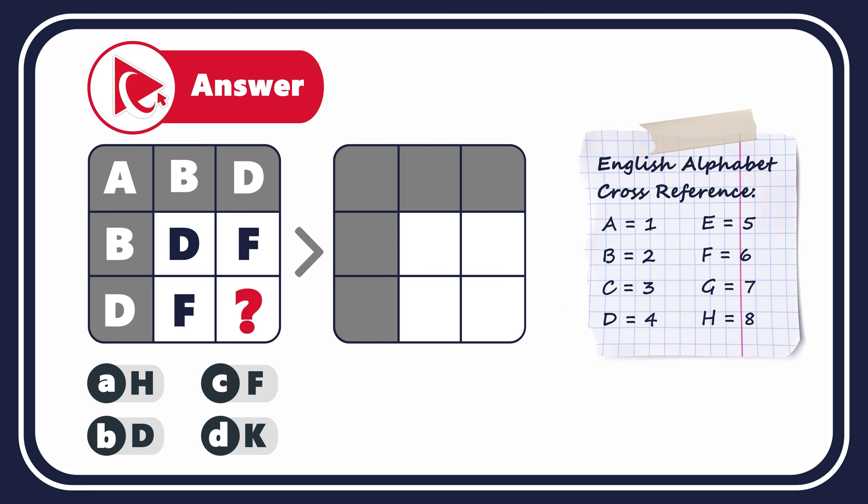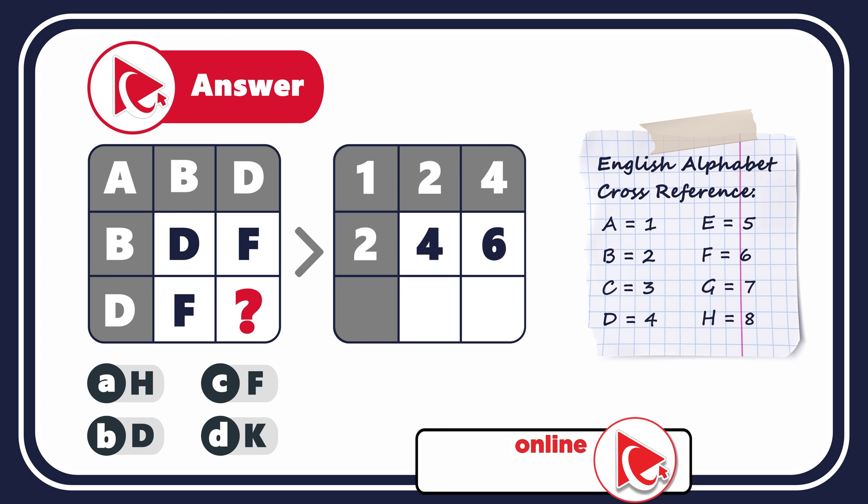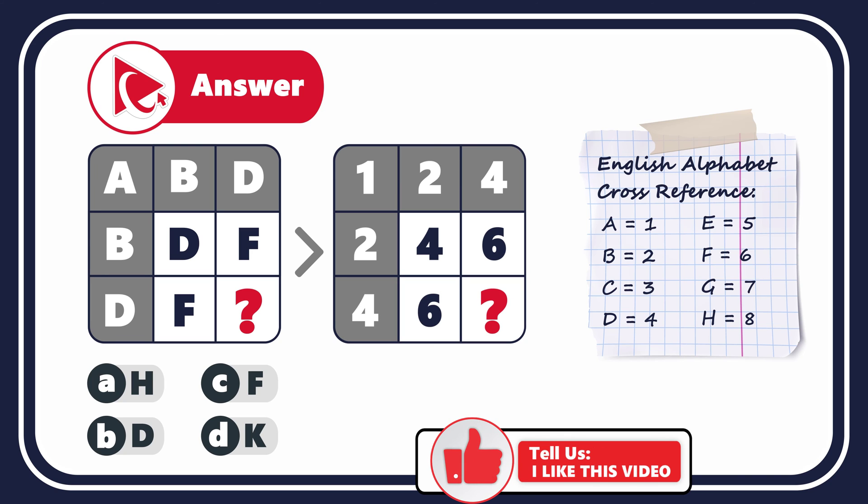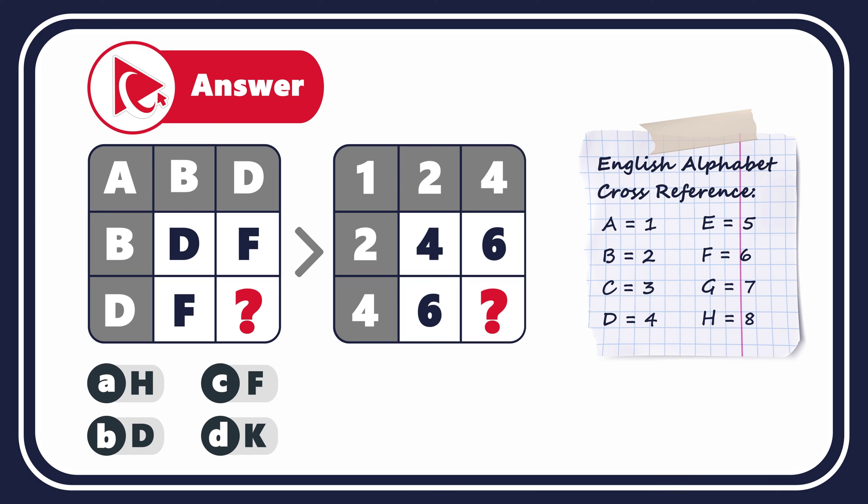If we follow this logic, we can replace all letters in all three rows with the numbers. So for the first row, the numbers will be 1, 2, and 4. For the second row, the numbers would be 2, 4, and 6. And for the third row, the numbers will be 4 and 6 and then would be the missing number. The next step is to determine what's happening with the numbers and how to calculate the missing number. Remember I gave you a hint? Hope you figured it out because numbers in the white squares here are the result of addition of numbers in the gray squares.